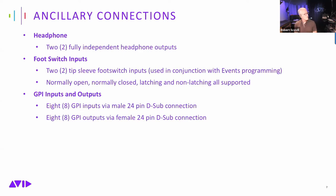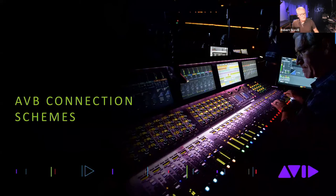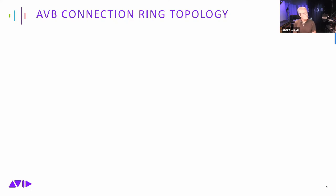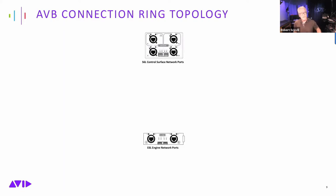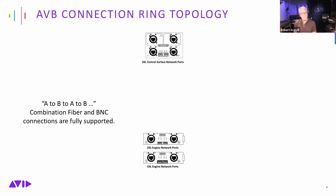That covers the ancillary connections. Now let's get into AVB connection schemes. In S6L systems there are actually two rings operating simultaneously: a local ring that includes the control surface connected to one AVB card in the engine, and a second AVB card in the engine that addresses the I/O loop and stage racks. The connection scheme is simple: A to B, B to A.